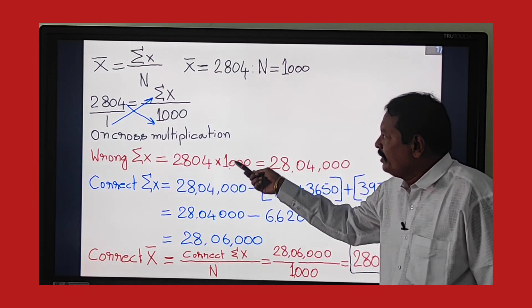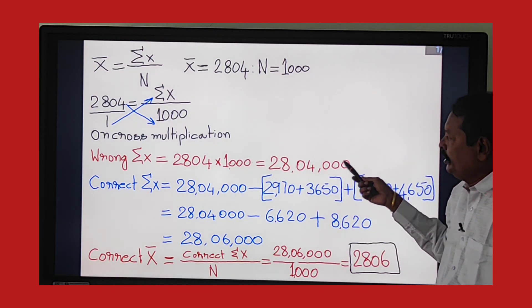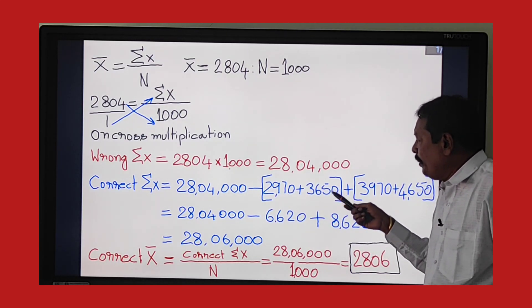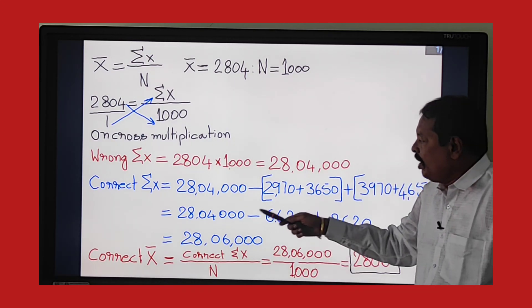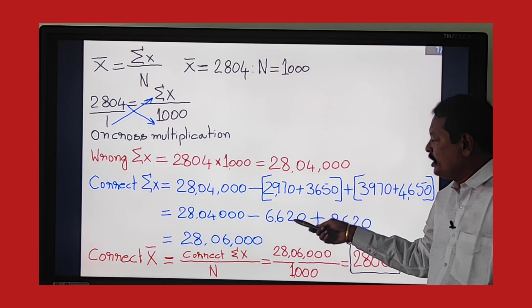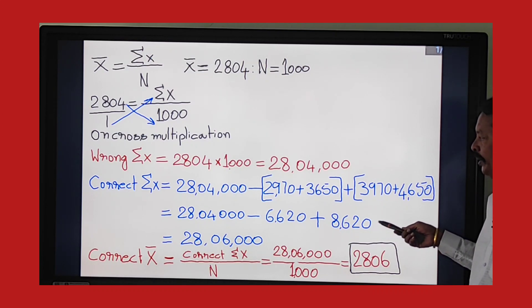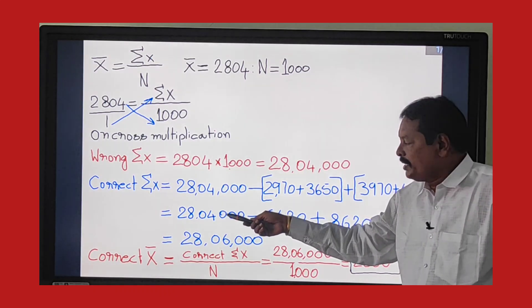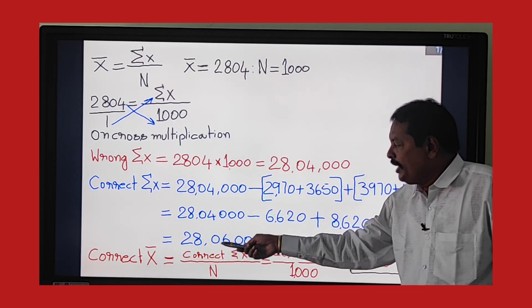Wrong Σx from cross multiplication: 2,804 × 1,000 = 28,04,000. Correct Σx = Wrong Σx − wrong figures of the two laborers + correct figures of the two laborers. So: 28,04,000 − (2,970 + 3,650) + (3,970 + 4,650) = 28,04,000 − 6,620 + 8,620 = 28,06,000. This is the correct Σx.